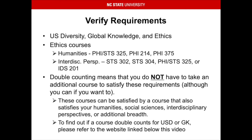As I stated previously, your verify requirements are US diversity, global knowledge, and ethics. Ethics is not technically a GEP, but it is a major requirement that can be double counted. The ethics courses that double count with your humanities requirement are PHI-SDS 325, PHI 214, and PHI 375. The ethics courses that double count with the interdisciplinary perspectives requirement are STS 302, STS 304, PHI-SDS 325, or IDS 201. Double counting means you do not have to take an additional course to satisfy these requirements, although you can if you want to. These requirements can be satisfied by a course that also satisfies your humanities, social sciences, interdisciplinary perspectives, or additional breadth credits.